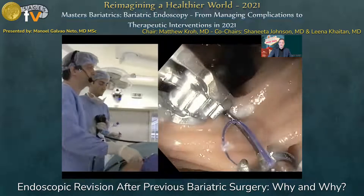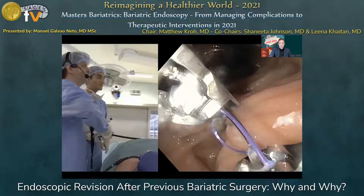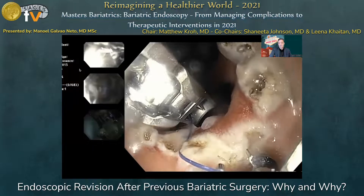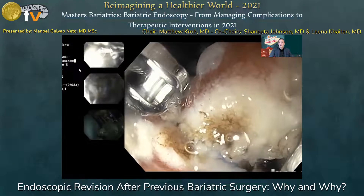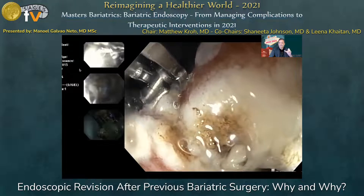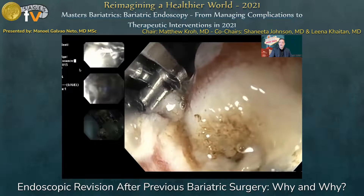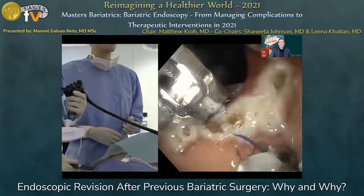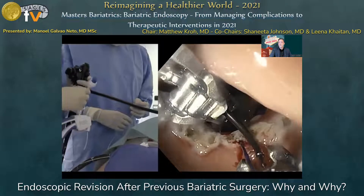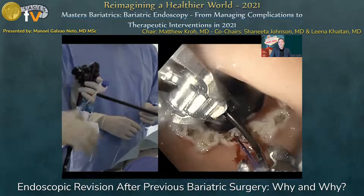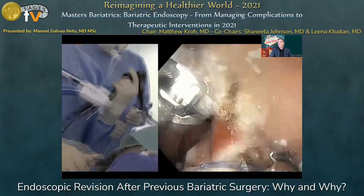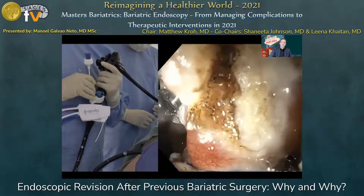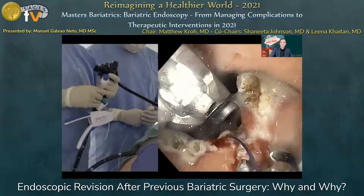You can see here the way we perform the suturing. We get inside the gastrojejunal anastomosis. In this case, there is some bleeding because of APC. We use a surgical needle and suture, passing from one side to the other, building a full-thickness suture. The question is how much we can remodel and reduce the anastomosis — you are about to see that on the following images.